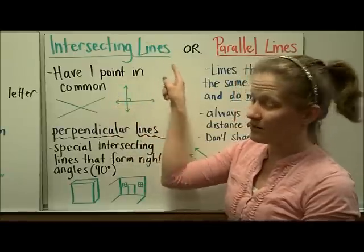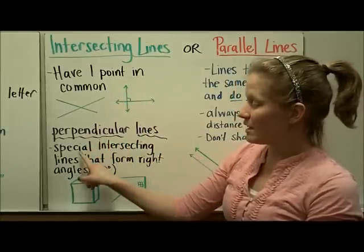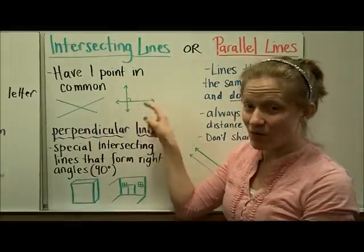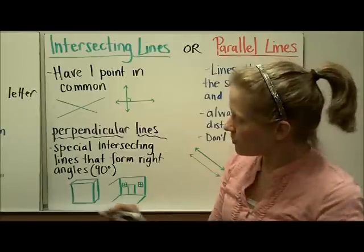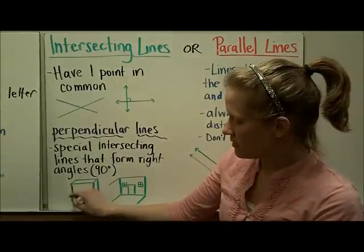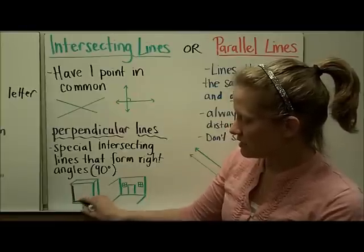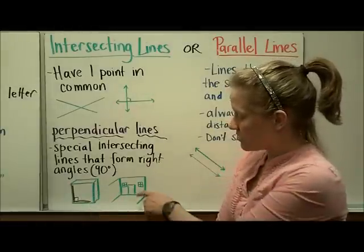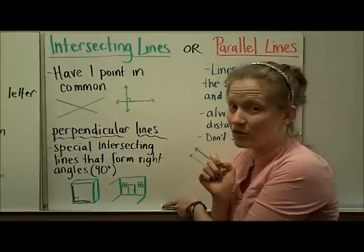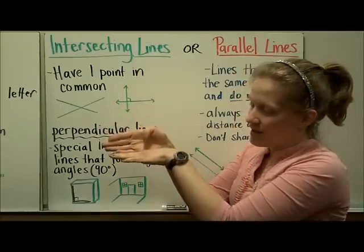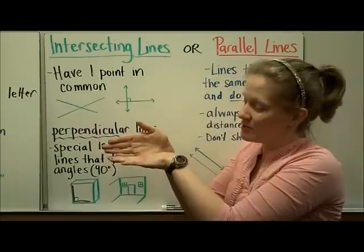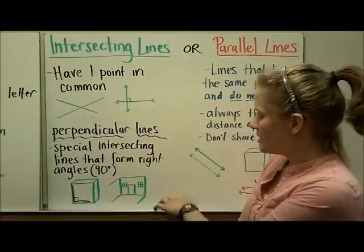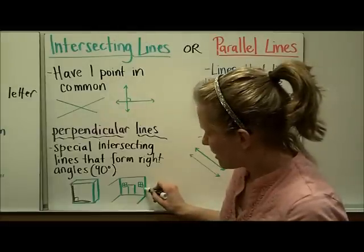These two lines are a special kind of intersecting lines — they are perpendicular lines. Perpendicular lines are special intersecting lines that form right angles, or 90-degree angles. The small square drawn in the corner represents that 90-degree angle. In a cube, for example, one edge is perpendicular to another, forming a right angle. Also, inside a house or room, where the wall meets the floor, they are perpendicular to each other because it forms a 90-degree angle. There are perpendicular lines all around us.